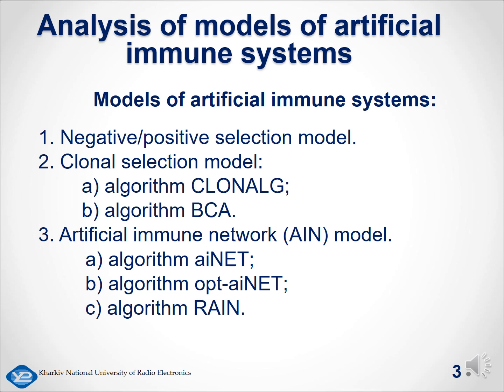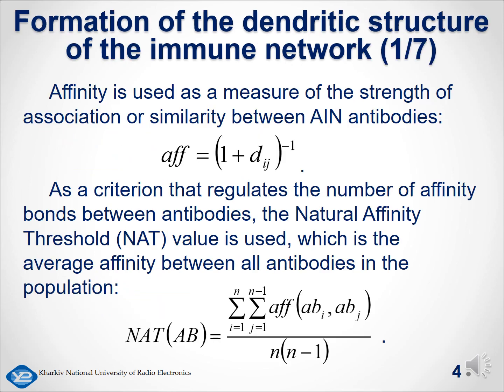In accordance with this, the paper sets the task of constructing a three-type immune network model that will allow solving the problem of increasing performance, ensuring acceptable accuracy of the results, and reducing the complexity of the process of forming the network of antibodies and recognition errors. We will consider the construction of three structures of the immune network using the example of solving the problem of data clustering.